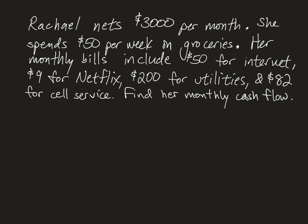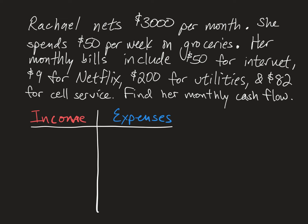In order to find her monthly cash flow, I'm going to set up a small budget with all incomes listed on the left side of the budget and all of the expenses on the right side. Rachel only has one income — $3,000 per month — so I will mark $3,000 as her income. When you create a budget, you want to express all expenses and income as monthly values.